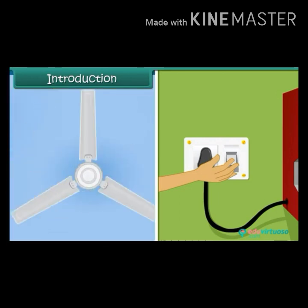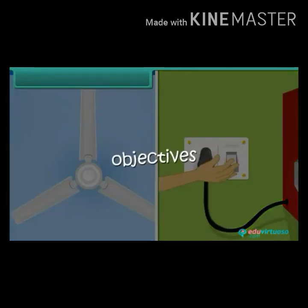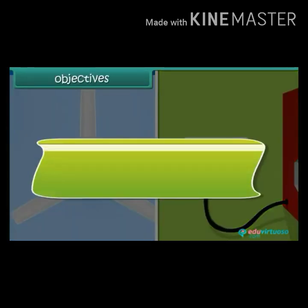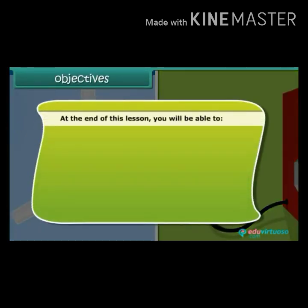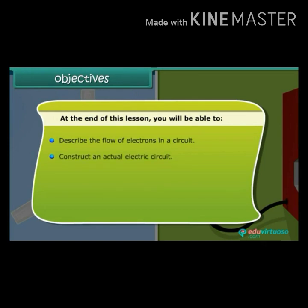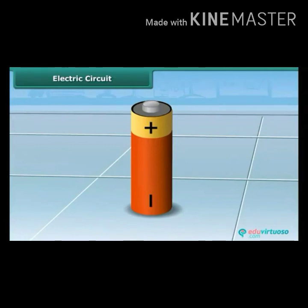Why do you need to press the electric switch to revolve the fan or heat a plate? By the end of this lesson you will be able to describe the flow of electrons in a circuit, construct an actual electric circuit, draw diagrams of electric circuits, and explain the path of an electric circuit. An electric cell or dry cell has positive and negative terminals and is the source of electricity.